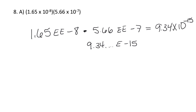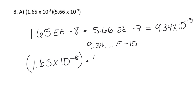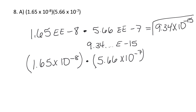If you don't have that EE button — maybe you have a scientific calculator without it, or you're using your phone — then you need to use parentheses. It's going to be 1.65 times 10 to the negative eight, but you're going to first put parentheses around that, and then another set of parentheses around 5.66 times 10 to the minus seven. The parentheses are more important with dividing, but get in the habit of using them. If you don't have the EE button, please use parentheses. Hit enter and you get the answer.